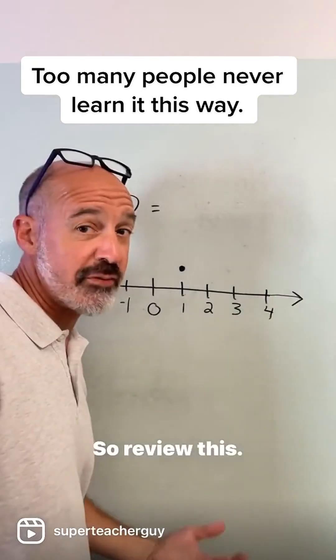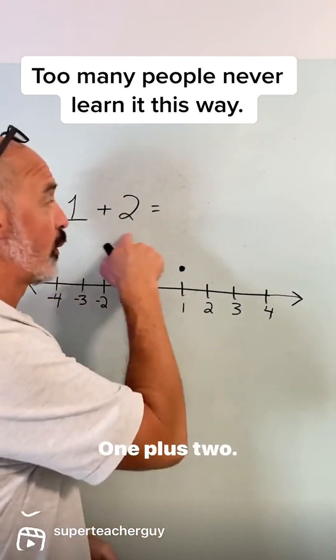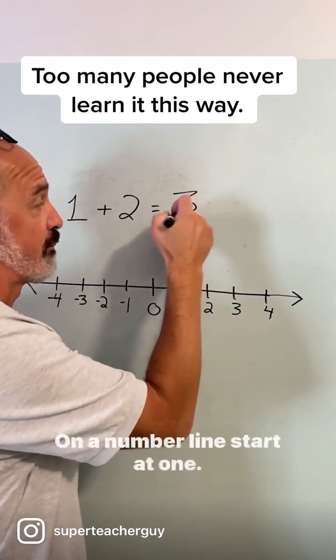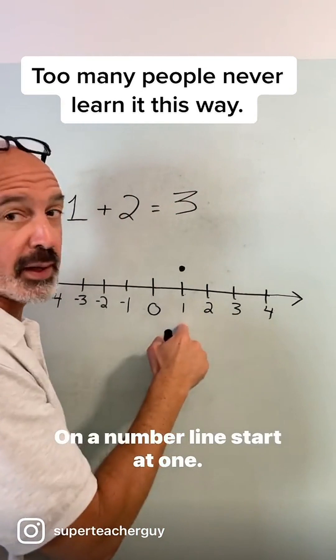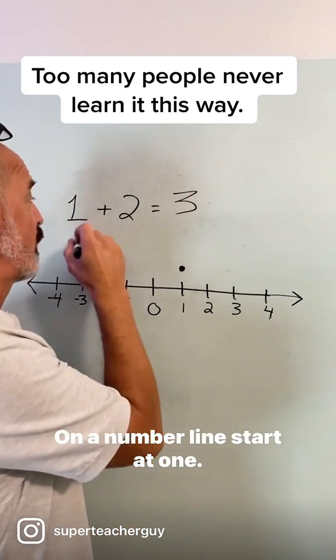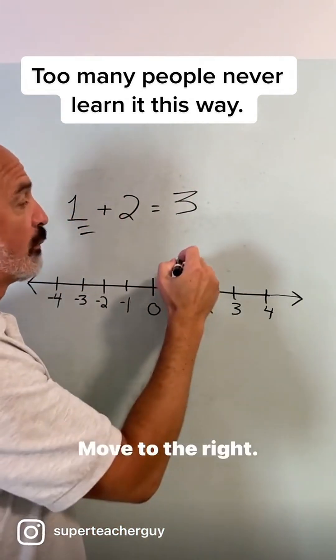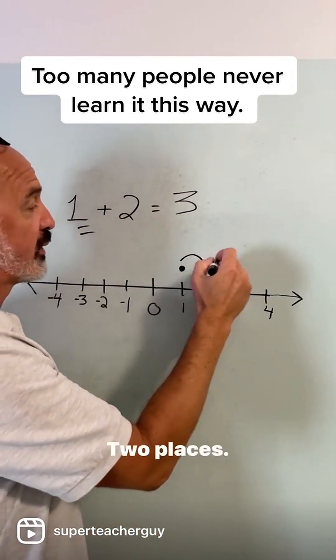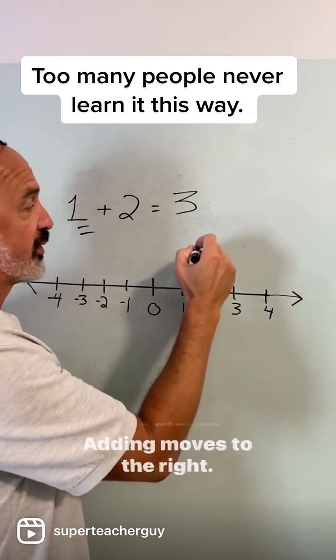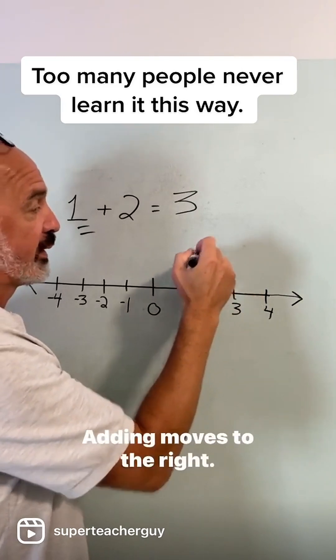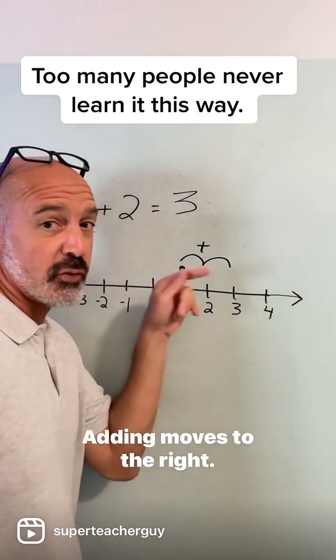So we do this: one plus two — obviously it's three. On a number line, start at one, move to the right two places. Adding moves to the right.